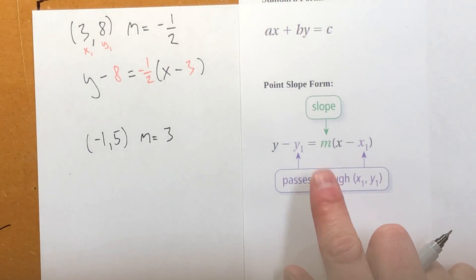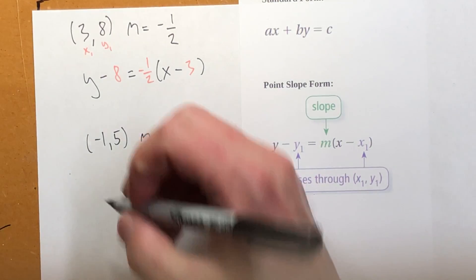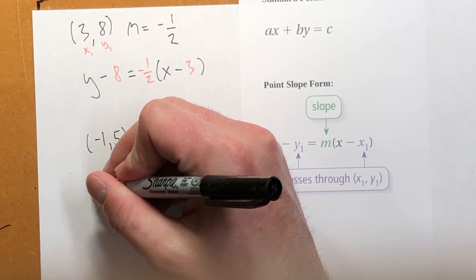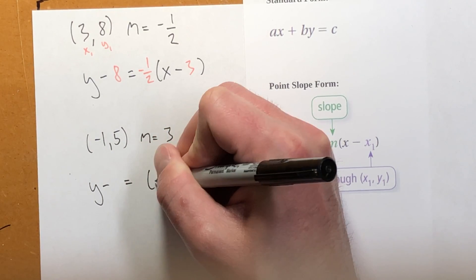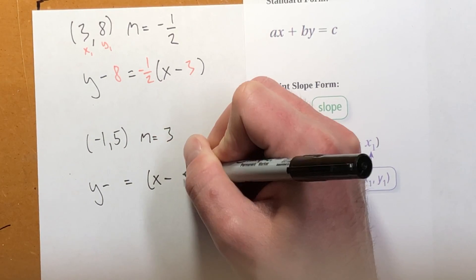So once again, I'm going to write this equation, leaving my three blank spots: y minus y1 equals m times x minus x1.